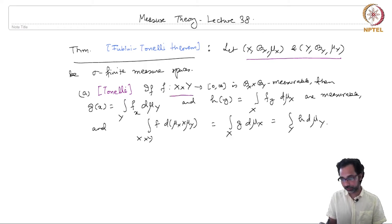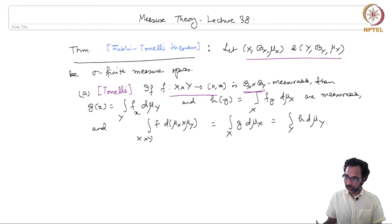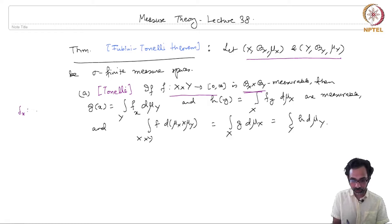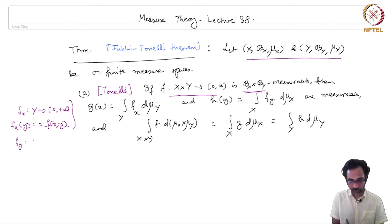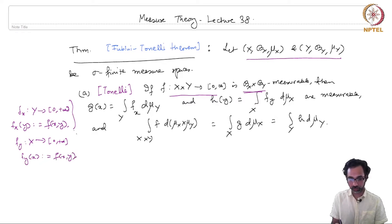If you take a function f which is an unsigned measurable function with respect to the product sigma algebra B_X cross B_Y, then the integral of the function f_x — recall that f_x was a function from Y to the non-negative reals defined as f_x(y) = f(x, y). Similarly, we can define f_y to be given by f_y evaluated at x as f(x, y).